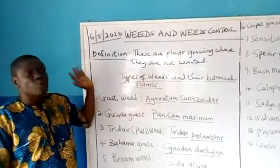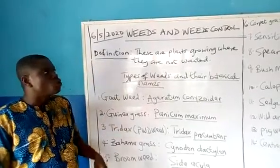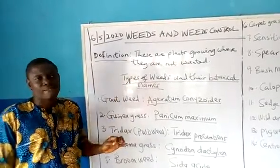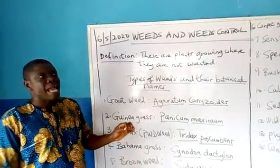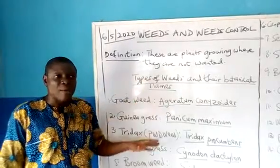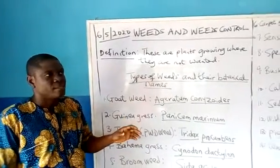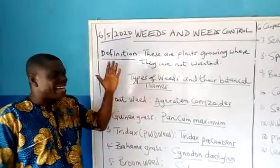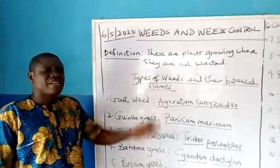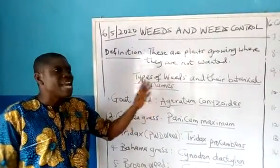What are weeds? These are plants growing where they are not wanted. Any particular plant you find in your farm that you the farmer did not plant can be regarded as a weed. There are common weeds we can find everywhere.